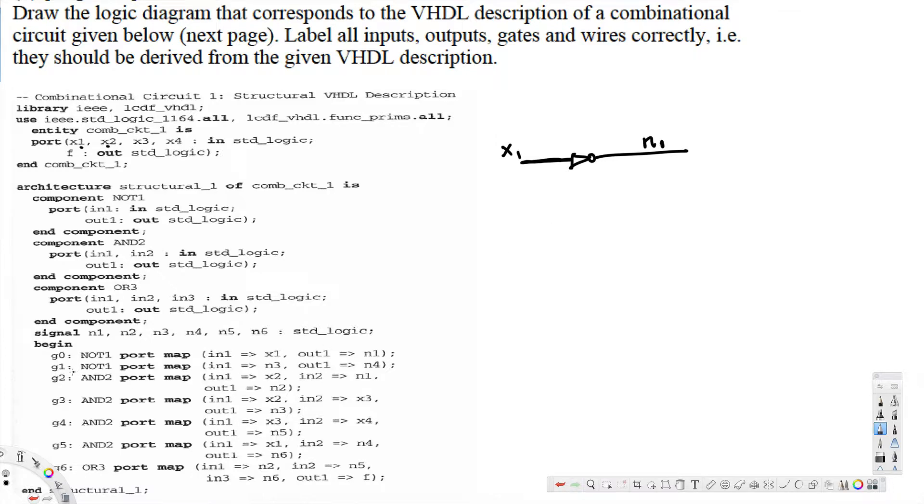For g1, g1 is a NOT gate again. For this one, n3 is going in. So it's starting from somewhere here. n3 is going in and n4 is going out of this.